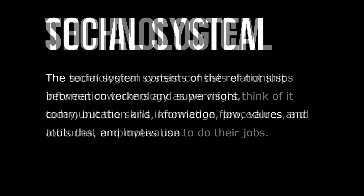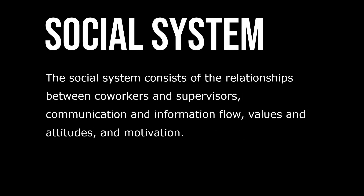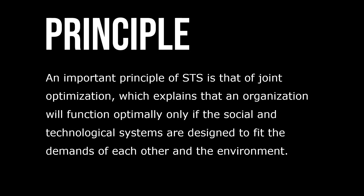The social system consists of the relationships between co-workers and supervisors, communication and information flow, values, attitudes, and motivation. An important principle of STS is that of joint optimization, which explains that an organization will function optimally